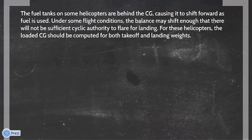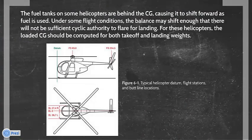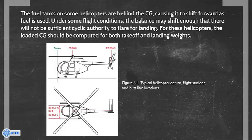The fuel tanks on some helicopters are behind the CG, causing it to shift forward as fuel is used. But under some flight conditions, the balance may shift enough that there will not be sufficient cyclic authority to flare for landing. For these helicopters, the loaded CG should be computed for both take-off and landing weights.